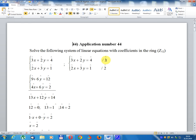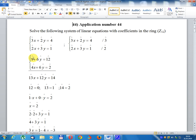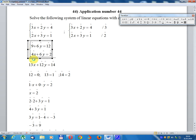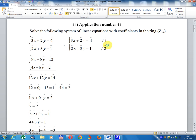Multiply the second equation by 2. This gives 9x + 6y = 12 and 4x + 6y = 2.